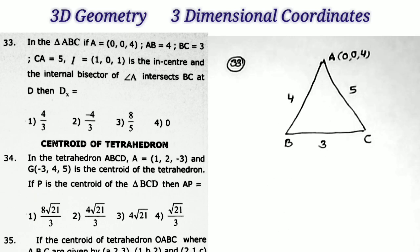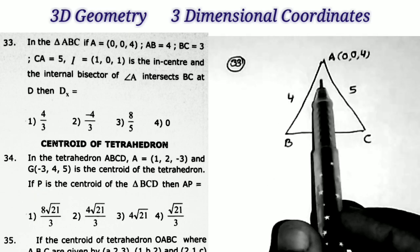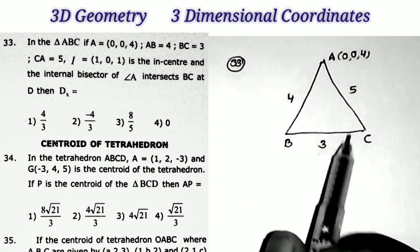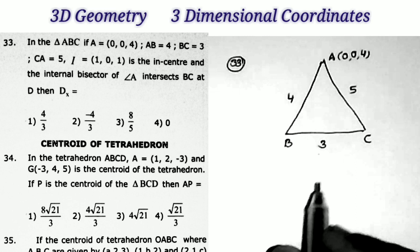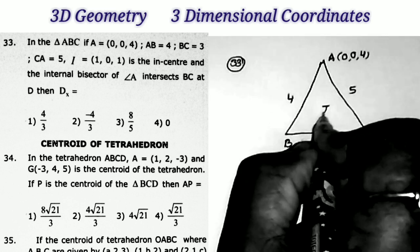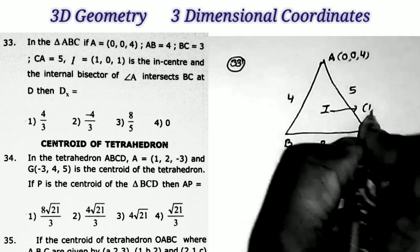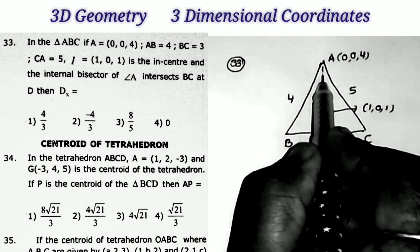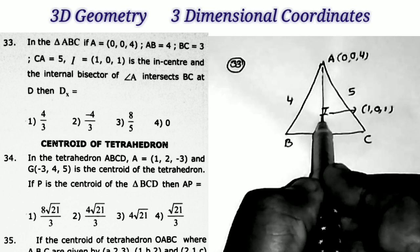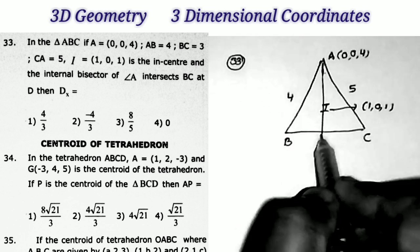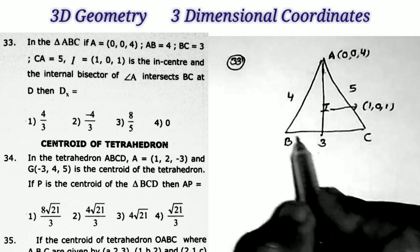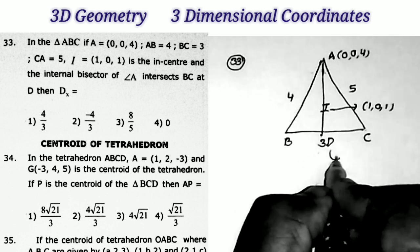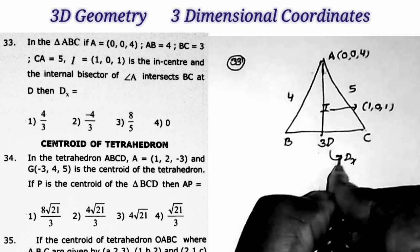Next question, sum number 33. In triangle ABC, A = (0, 0, 4), AB = 4, BC = 3, CA = 5, and I = (1, 0, 1) is the in-center of the triangle. The internal bisector of angle A intersects BC at point D. What are the coordinates of D?